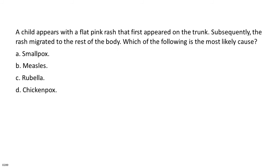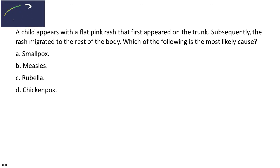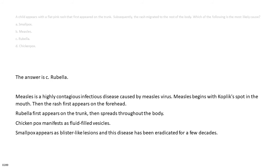A child appears with a flat pink rash that first appeared on the trunk. Subsequently, the rash migrated to the rest of the body. Which of the following is the most likely cause? A. Smallpox. B. Measles. C. Rubella. D. Chickenpox. The answer is C. Rubella. Measles begins with Koplik spots in the mouth, then the rash first appears on the forehead. Rubella first appears on the trunk, then spreads throughout the body. Chickenpox manifests as fluid-filled vesicles. Smallpox appears as blister-like lesions and this disease has been eradicated for a few decades.